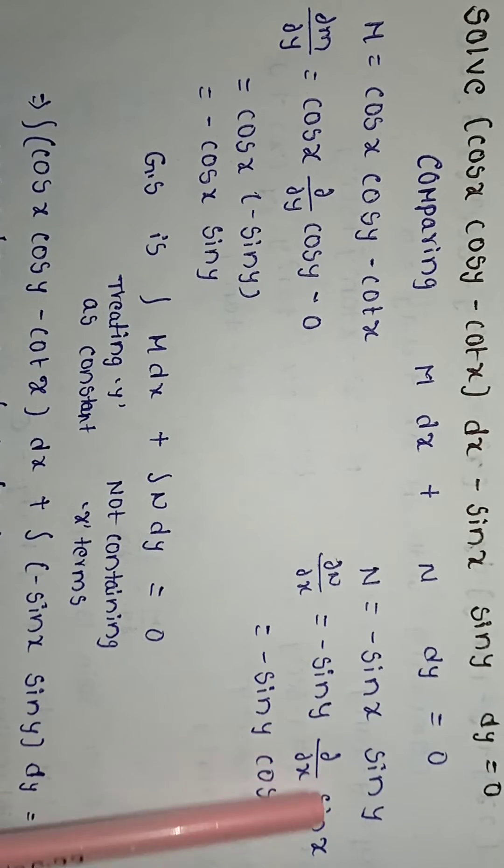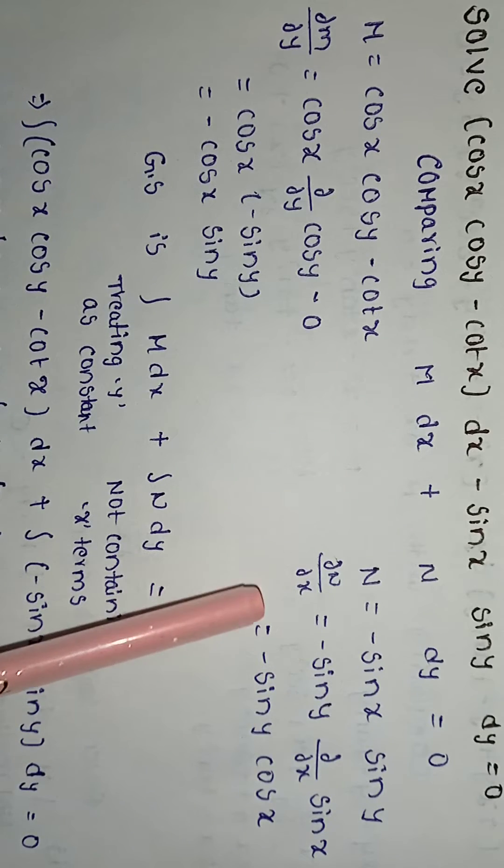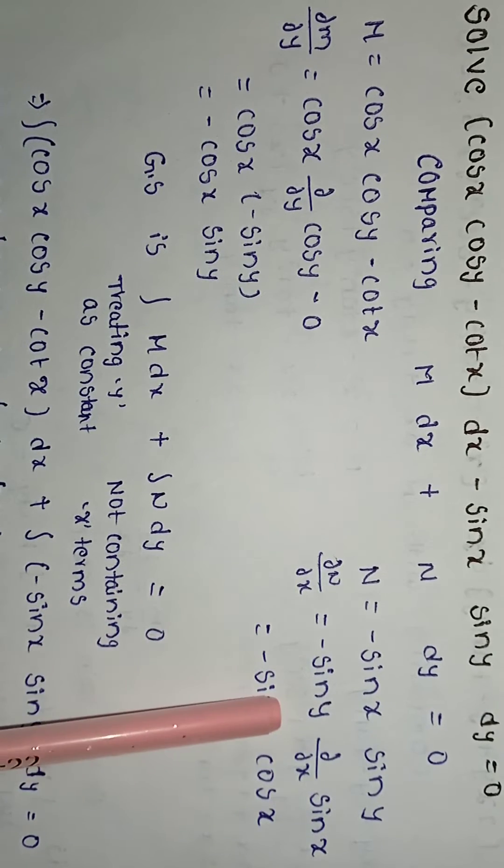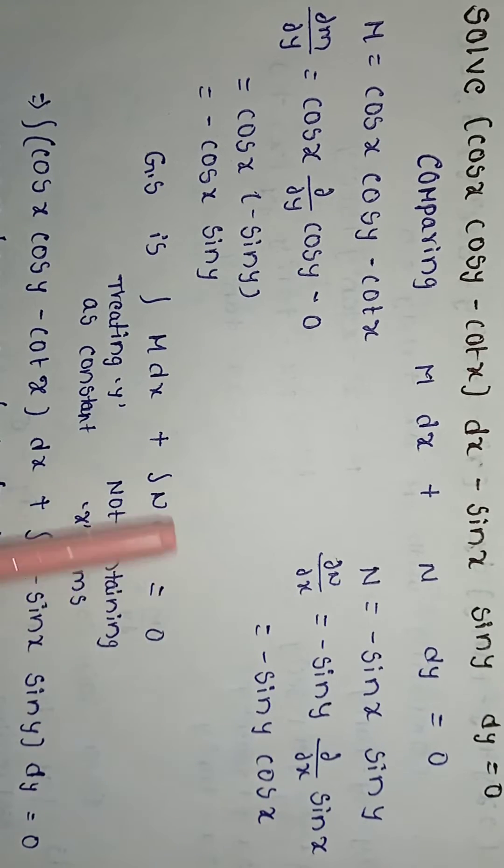n is equal to minus sin x sin y. ∂n/∂x: with respect to x, y is constant. Derivative of sin x is cos x, giving minus cos x sin y.